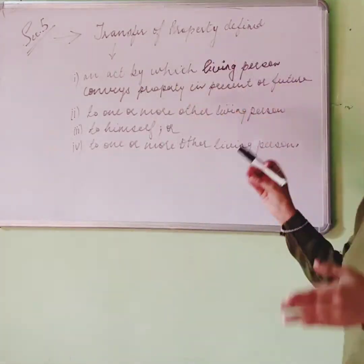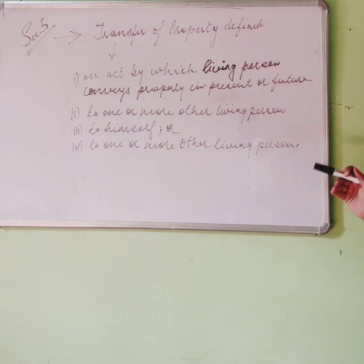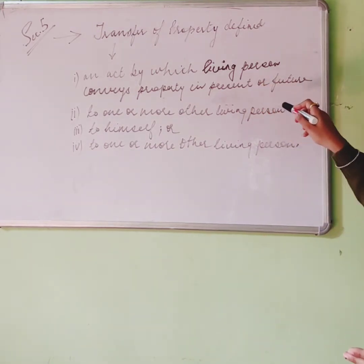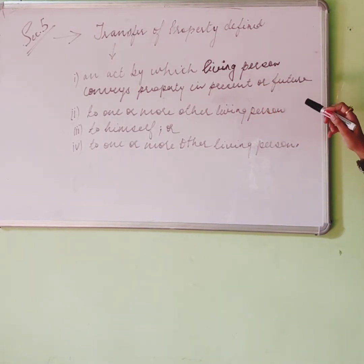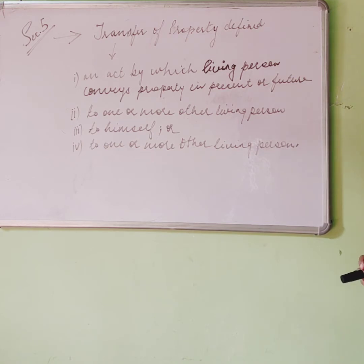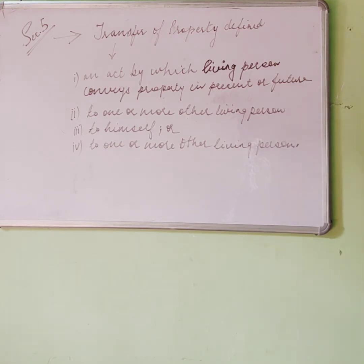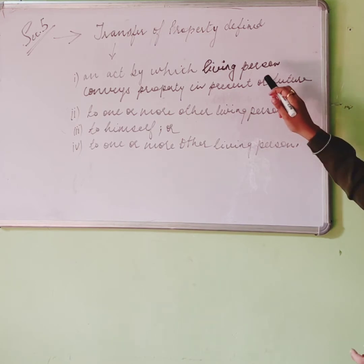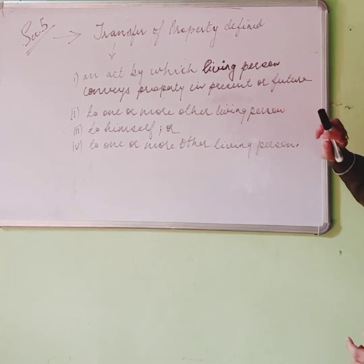When we are talking about a future date, the property is transferred to the transferee and the transferee's interest depends on that future date — the interest will be created from that future date. So the first ingredient covers the 'present or future' aspect of transfer.